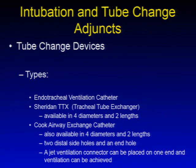Tube change devices include the endotracheal ventilation catheter and Sheridan TTX, which are tracheal tube exchangers available in four diameters and two lengths. Cook airway exchange catheters are also available in four diameters and two lengths, have two distal side holes and an end hole, and can have a jet ventilation connector placed on one end to achieve ventilation through the device.